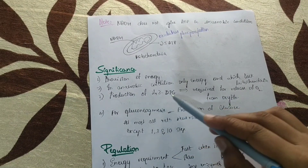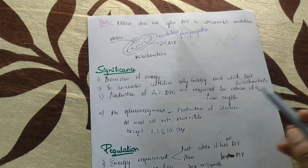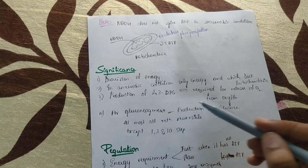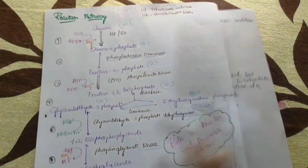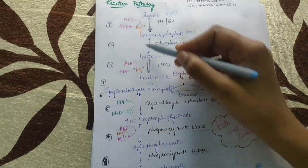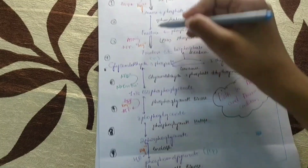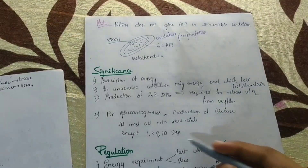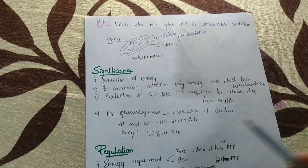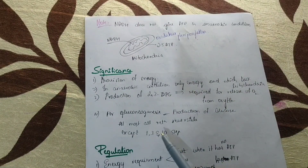Production of 2,3-DPG helps in the dissociation of oxyhemoglobin and provides oxygen to the tissues. Glycolysis also helps in gluconeogenesis — the production of glucose. As I already told you, almost all steps in glycolysis are reversible except steps 1, 3, and 10. So from pyruvate we can produce glucose again, and that production of glucose is gluconeogenesis.